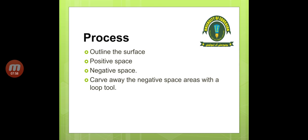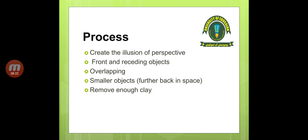Define the outline on the surface and extract positive and negative spaces. Positive space is, for example, the flower you have made; negative space is what exists in the background. Carve away the negative space areas with a loop tool. If you want to create an illusion of perspective, plan which areas will be in front and which will be behind — extract more clay from the background areas and less from the foreground. Some things may need to overlap, and smaller objects will recede further back into the space. Remove enough clay so that your art piece becomes clear.